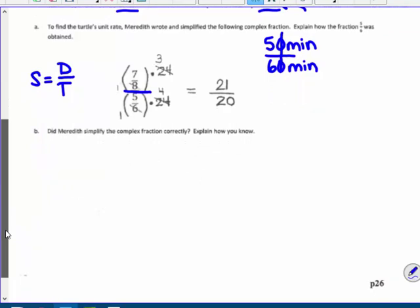7/8 divided by 5/6. And Meredith is doing a unique way of simplifying this. She's not doing 7/8 times the multiplicative inverse 6/5. Did she get that right? I'm going to check. 7/8 divided by 5/6 times 6/5, multiplicative inverse. And yes, I can cross-cancel a 2 out of those. Then I get 7 times 3 is 21. Then 4 times 5 is 20. Yes, Meredith got that right. What did she do? Oh, she took the numerator and multiplied it by 24, and took the denominator and multiplied it by 24, the least common denominator of 8 and 6.